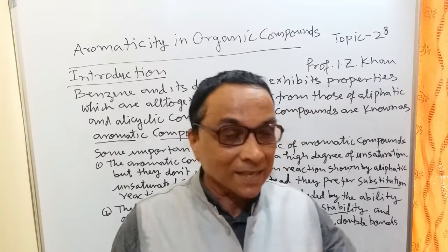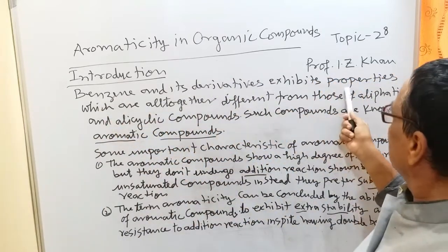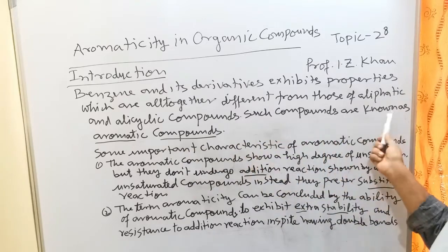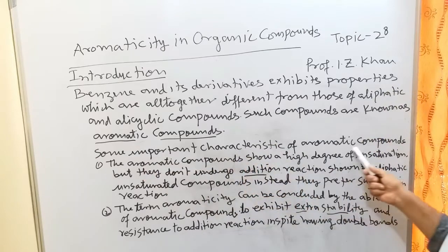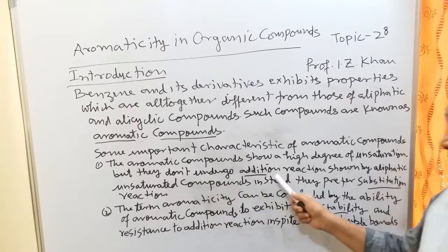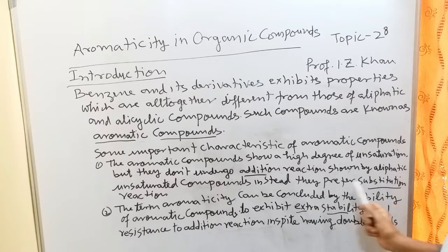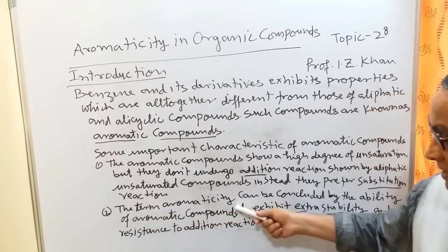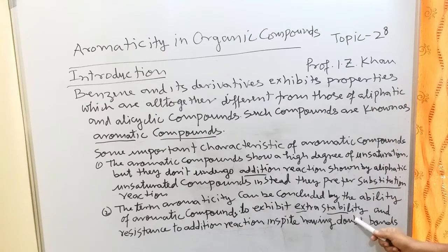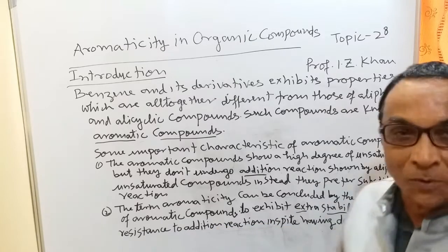Benzene and its derivatives exhibit properties which are altogether different from those of aliphatic and alicyclic compounds — such compounds are known as aromatic compounds. Some important characteristics: first, aromatic compounds show a high degree of unsaturation but do not undergo addition reactions like aliphatic unsaturated compounds; instead they prefer substitution reactions. Second, aromaticity can be defined by the ability of aromatic compounds to exhibit extra stability and resistance to addition reactions in spite of having double bonds.